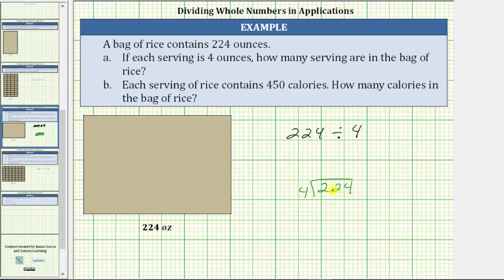We first determine how many fours in 22, which is five. Five times four is 20. We subtract, the difference is two. We bring down the four and determine how many fours in 24, which is six. Six times four is 24. We subtract, the difference is zero.